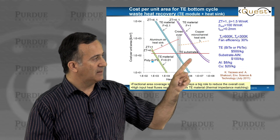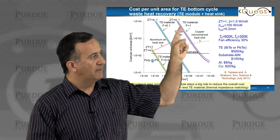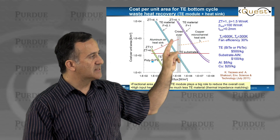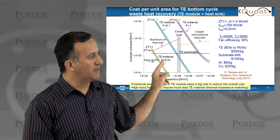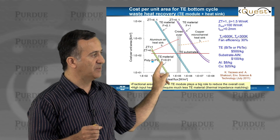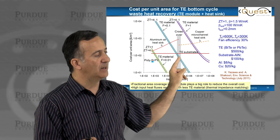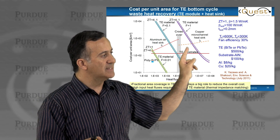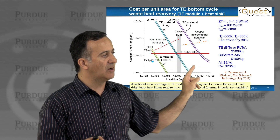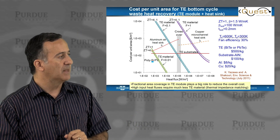Here are the data. The curve at fractional area coverage F = 1 (100% coverage) is the baseline you saw at the beginning. Here is 10% coverage, and here is 1% coverage. Of course, 1% means barely any thermoelectrics — that's hard to achieve. But by going to 10% coverage, you can significantly lower the cost, and the material cost of thermoelectrics becomes negligible. That was an important insight.